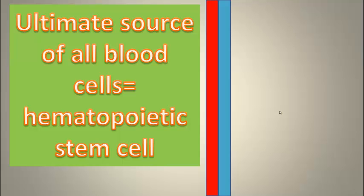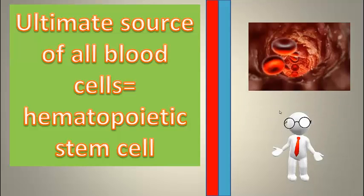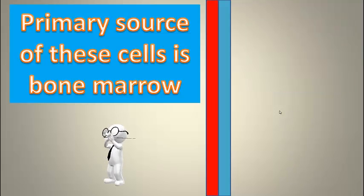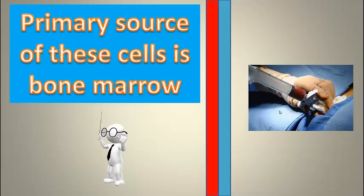The blood contains cells with many forms and functions. The ultimate source of these cells is called the hematopoietic stem cell or HSC for short. The primary source for these cells is the bone marrow.